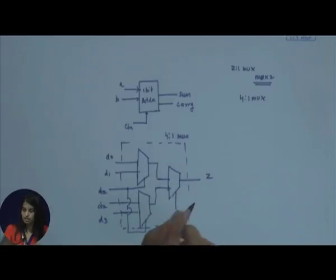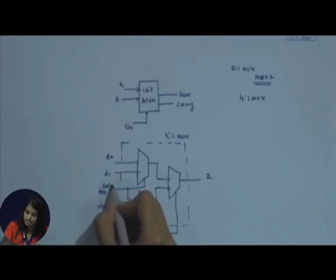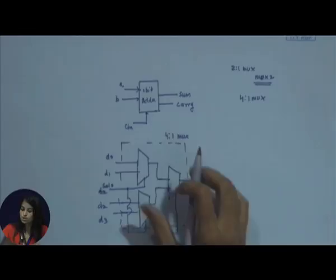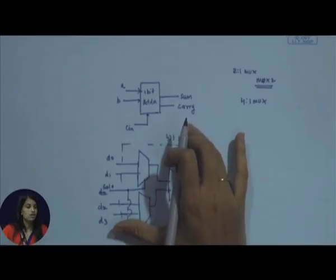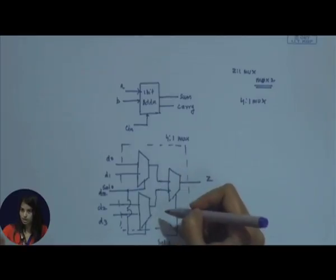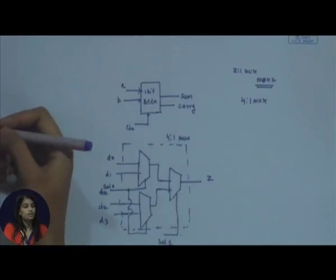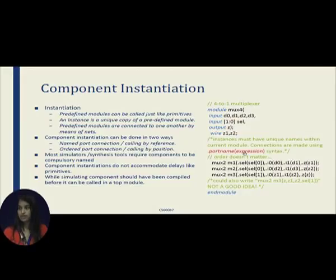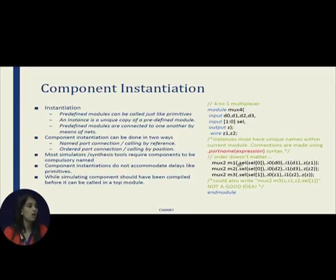We have a 2-bit select line. We use one select line bit for two of the muxes and one select line bit for the third mux. We instantiate the 2-to-1 mux inside the mux4 module. Component instantiation can be done in two ways: it can be called by reference or called by position — somewhat similar to C function calling, but not exactly.